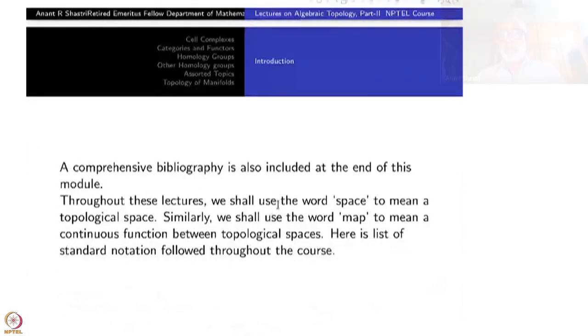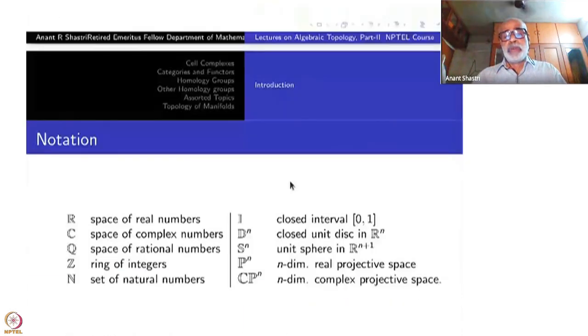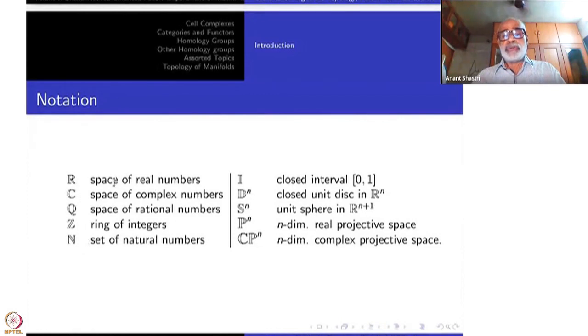A comprehensive bibliography is also included at the end of this module for your ready reference. Throughout these lectures, we shall use the word 'space' to mean a topological space. Similarly, we shall use the word 'map' to mean a continuous function between topological spaces. Here is a list of standard notations followed throughout this course. These Euler fonts: real numbers, complex numbers, rationals, integers, and so on. I for the closed interval [0,1], D^n closed unit disc in R^n, S^n closed sphere in R^{n+1}, P^n is n-dimensional real projective space, and CP^n is n-dimensional complex projective space.